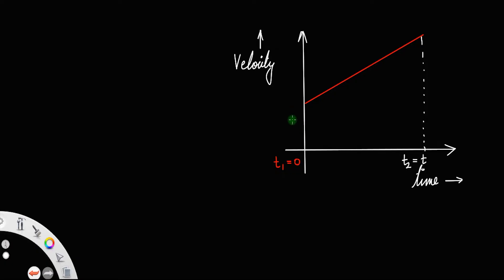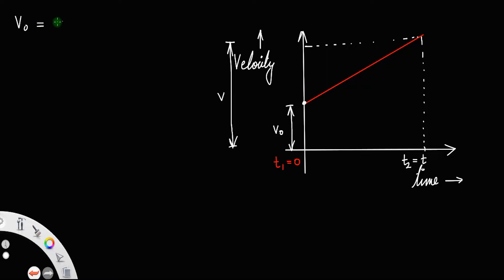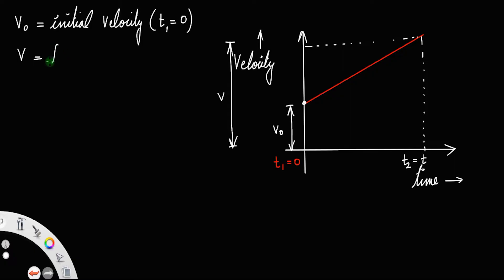Initially, the velocity will be v₀ — we usually take that as v₀. That means this length is equal to v₀, and this point represents the initial velocity. After the time t2, or after the time t, this length will be the final velocity v. So v₀ is the initial velocity, that is the velocity at t1 equal to 0, and v is the final velocity when t2 is equal to some time t.